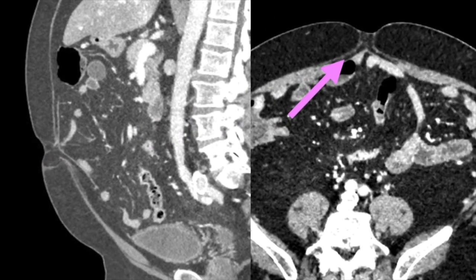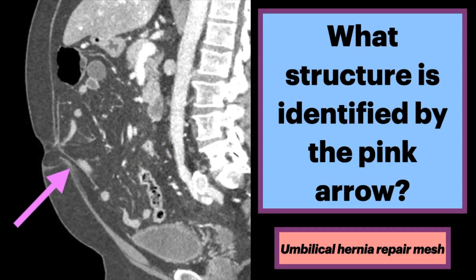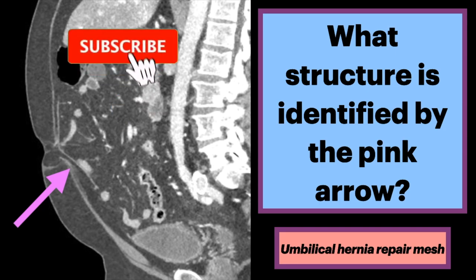Axial CT shows a similar appearance. There are no bowel loops that protrude through this defect. This patient is post-surgical. This was an umbilical hernia repair mesh.